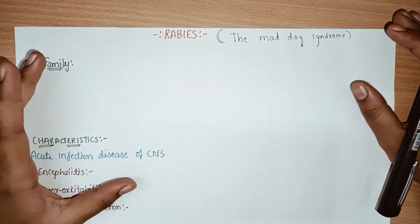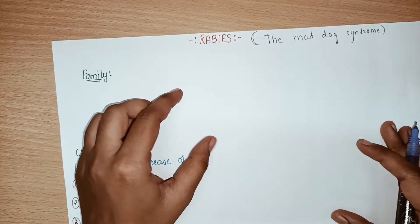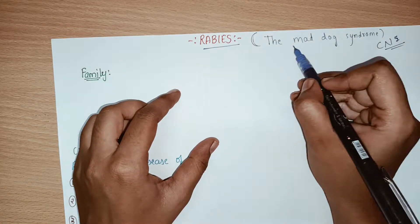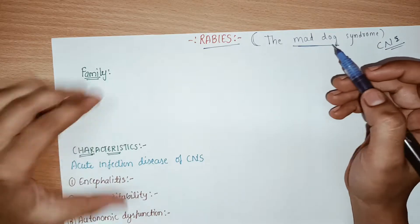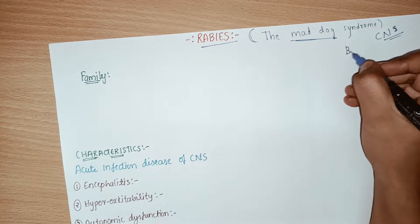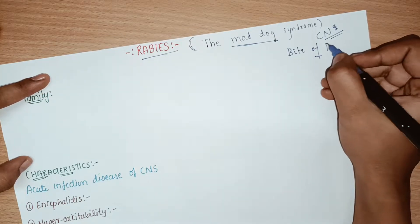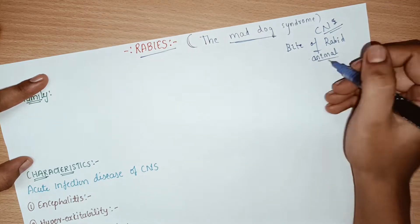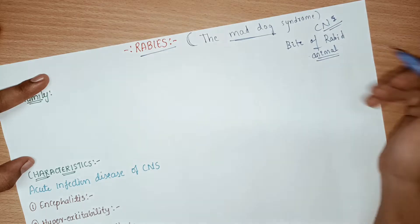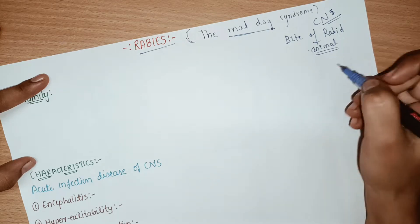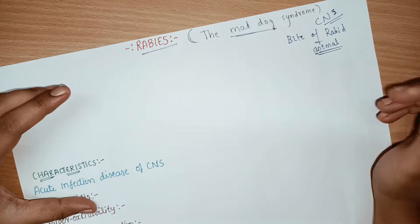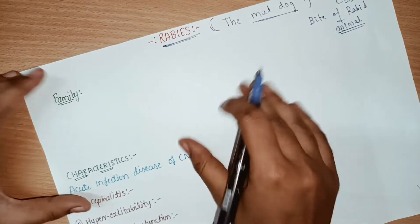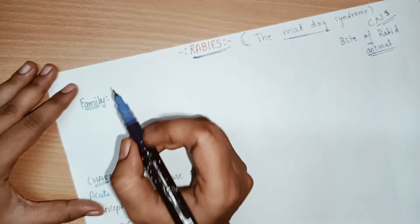Hello everyone, welcome to our channel Daily Doctor. Today I am presenting a new video on rabies. Rabies is one of the important chapters in CNS. Rabies is also called mad dog syndrome. Rabies comes from the bite of a rabid animal — a rabid animal is an animal which is affected with the rabies virus. Normally the rabid animals are dogs, but getting a bite does not mean you are automatically affected; the virus has to be present.